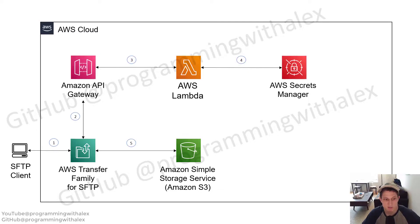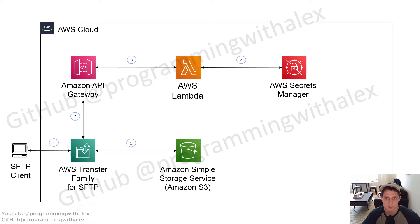And finally, a refresher. Here's the diagram as presented at the beginning of the video. This should seem much more clear now — you should have a much better understanding of how all the components link together. Well, that's it for this video. Thanks for watching. In the next video, we're going to walk through how to create the SFTP server on AWS. Stay tuned for more.